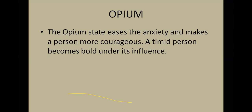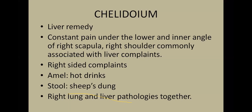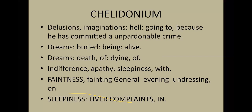Chelidonium is a main liver remedy. Its key symptom is constant pain under the lower and inner angle of the right scapula, associated with liver complaints — a right-sided remedy relieved by hot drinks. Stool is like sheep dung. Liver and lung pathologies come together. In the Papaveraceae context, Chelidonium has 'delusion that he is going to hell because he has committed an unpardonable crime,' dreams of being buried alive, and indifference with sleepiness — showing both sides: pain and withdrawal.